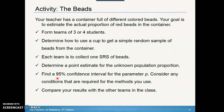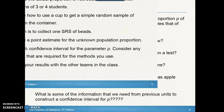Think about this for a second: if you had a bunch of teams of three or four students, would all of the teams get the same proportion? How could we use the proportion of red beads that each team got in order to estimate the population proportion? And what does a 95% confidence interval actually mean in this case?